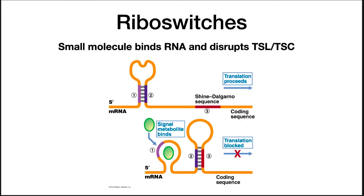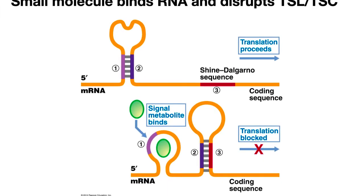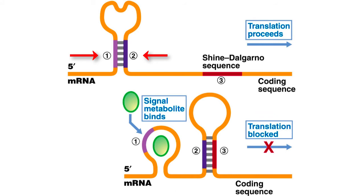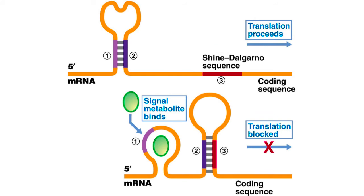Another type of regulation not involving a protein is riboswitches. In this case, a small molecule binds to messenger RNA and modulates transcription or translation of the message. This regulation involves the changing of the secondary structure of the messenger RNA in response to the binding of a small molecule. In the example shown here, sequences 1 and 2, or 2 and 3, are complementary and capable of forming a stem-loop structure. When there is no small molecule, 1 and 2 form a stem loop, and 3 — which is the Shine-Dalgarno sequence — is bound by the ribosome, and translation proceeds. If the small molecule binds, it occupies region 1, and 2 binds with 3, blocking the Shine-Dalgarno sequence and blocking translation. Thus, the signal metabolite can stop translation of the message.